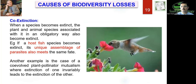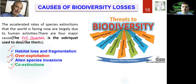Co-extinction: when one species becomes extinct, other species that are closely associated with and dependent on it also go extinct. For example, a host fish may have many parasites that depend only on that specific host — if the host goes extinct, the parasites go extinct too. Similarly, in a plant-pollinator mutualism relationship, if the plant goes extinct, the pollinator also goes extinct, and vice versa, because the pollinator gets nectar from the plant. So remember all four of the Evil Quartet: habitat loss and fragmentation, over-exploitation, alien species invasion, and co-extinction.